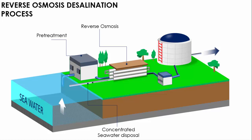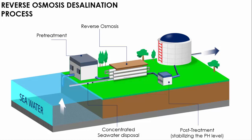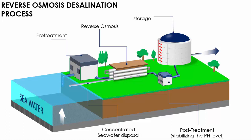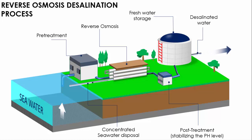The concentrated sea water — the brine — will be sent back to the sea. The water without salt will be transferred to post-treatment, where stabilizing the pH level happens. From there, the water will be transferred to the fresh water storage tanks, and there you get the desalinated water.